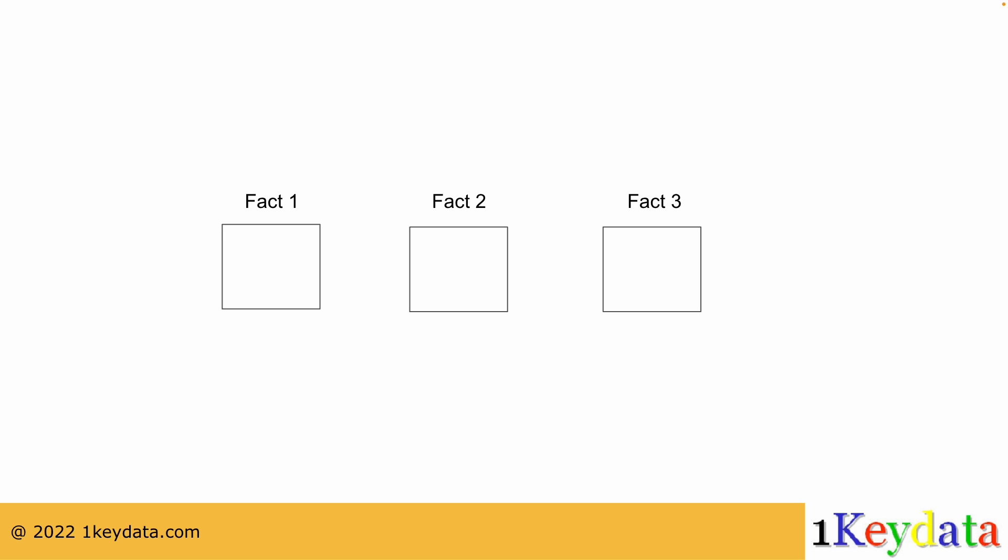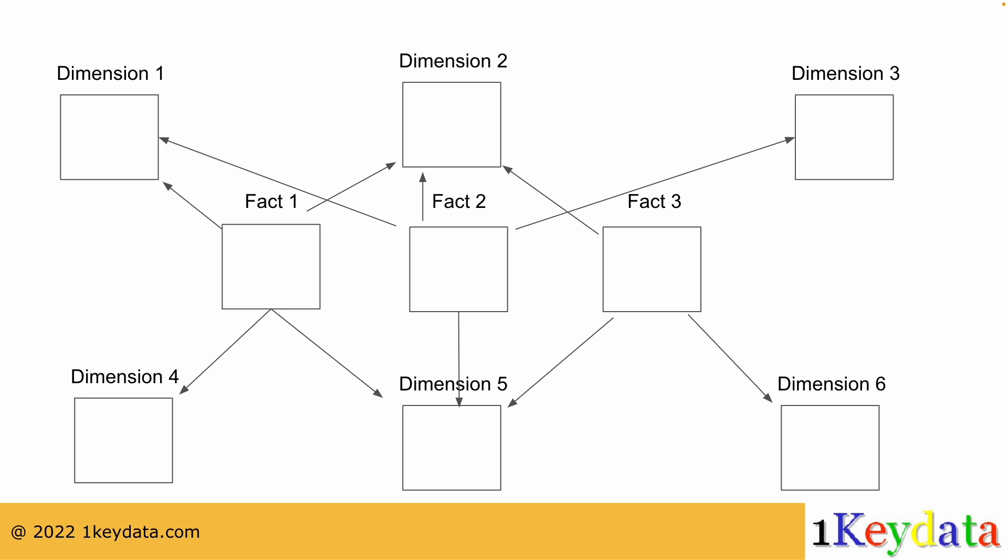In a typical data warehousing system, there are multiple fact tables, each connecting to its own set of dimension tables. A conformed dimension is a dimension that has exactly the same meaning and content when being referred to from different fact tables.